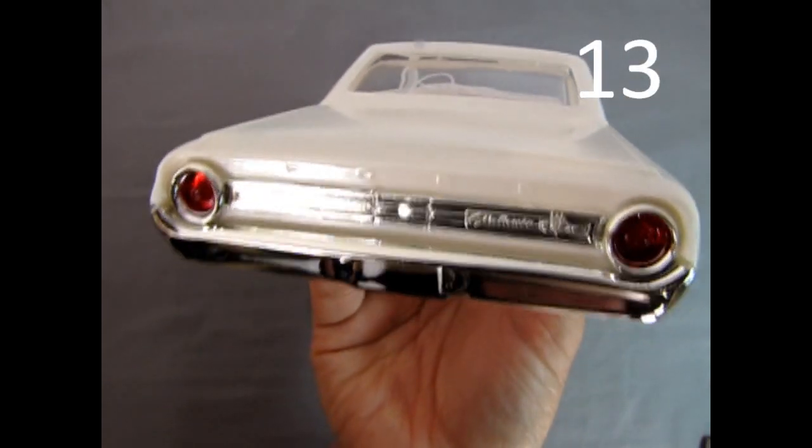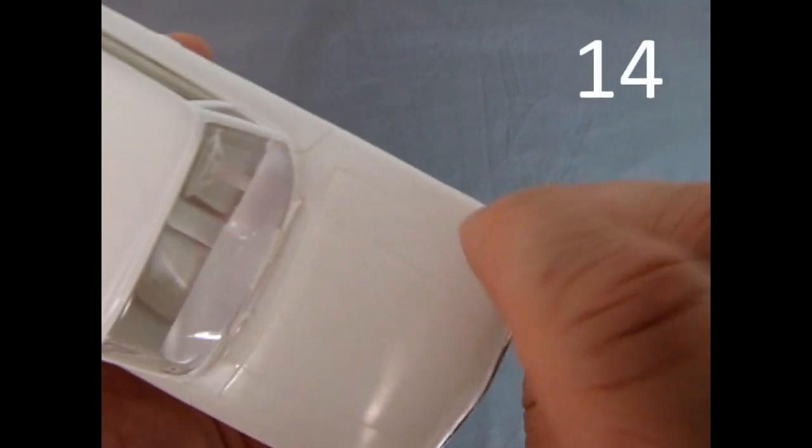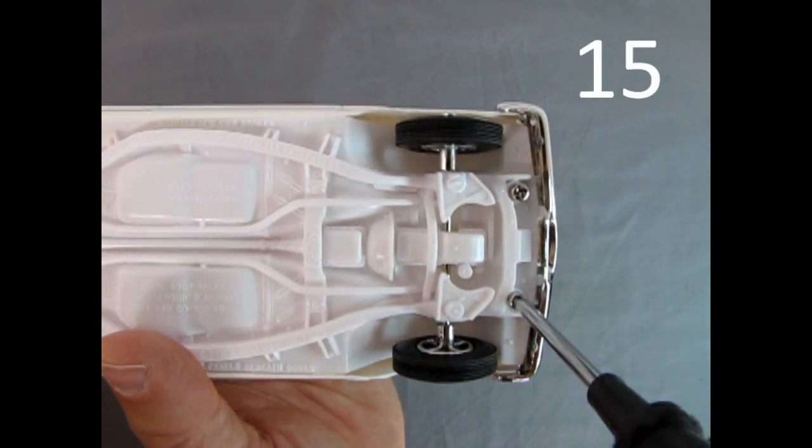Install the front and the rear bumper. Combine the fender spears with the body. Screw the chassis to the body.